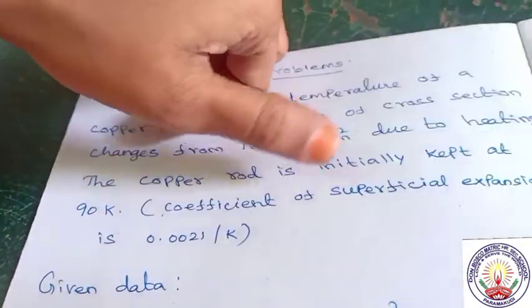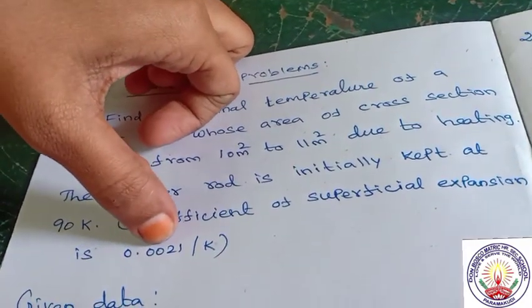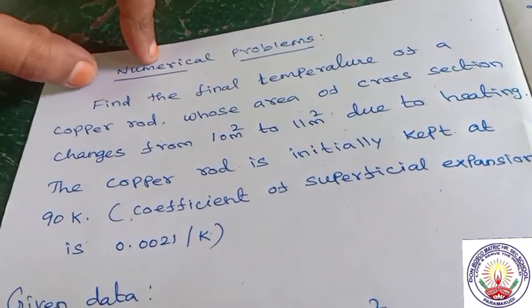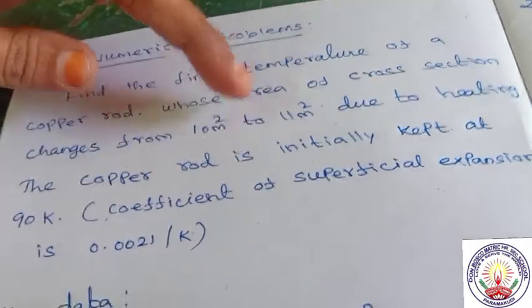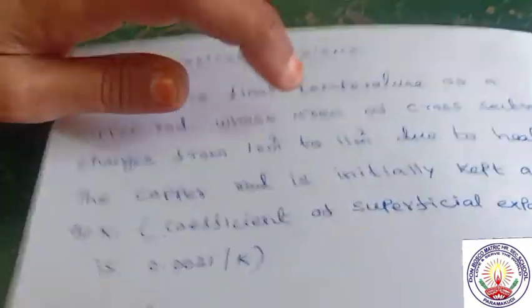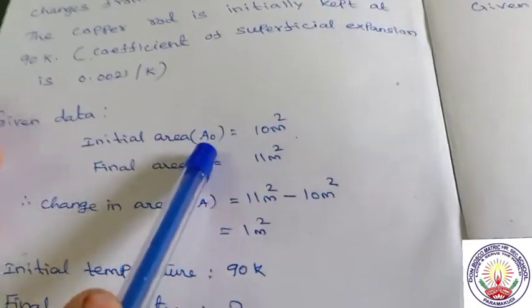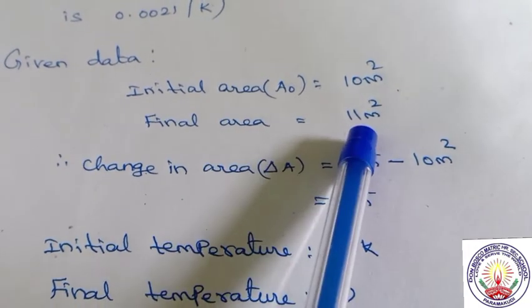The coefficient of superficial expansion is 0.0021 per Kelvin. The copper rod heats up and the area of cross section goes from 10 meter square to 11 meter square. Given data: initial area A0 is 10 meter square, and final area after heating is 11 meter square.